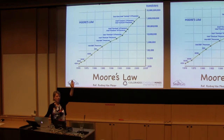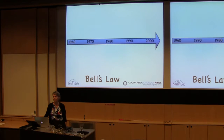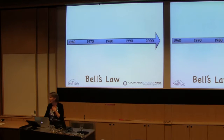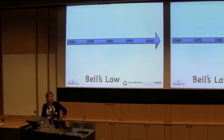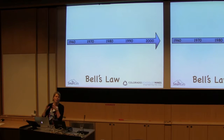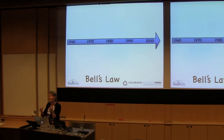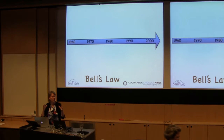I think everyone in this room has heard of Moore's Law. Who's heard of Bell's Law? Alexander or Gordon? Actually, I don't know — Gordon, I'm sure. This law was formed around 1972, as a corollary to Moore's Law. What the law states is that a new computer class is formed approximately every decade. You can define that computer class either on hardware, on user interface, or on networking. But we will see every decade approximately a whole new computer class get formed.